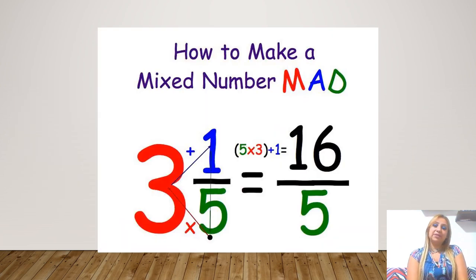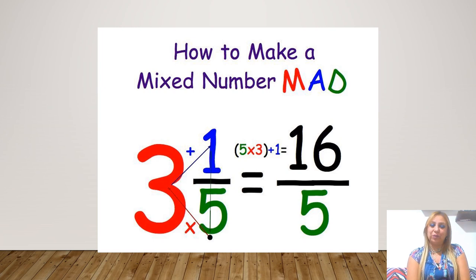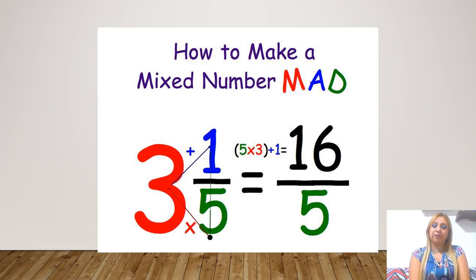How to make a mixed number into an improper fraction? Don't forget MAD: multiply the denominator by the whole number, then add the numerator. In this example, I multiply 5 by 3, which is 15, then add 1, and that is 16, and keep the denominator the same.